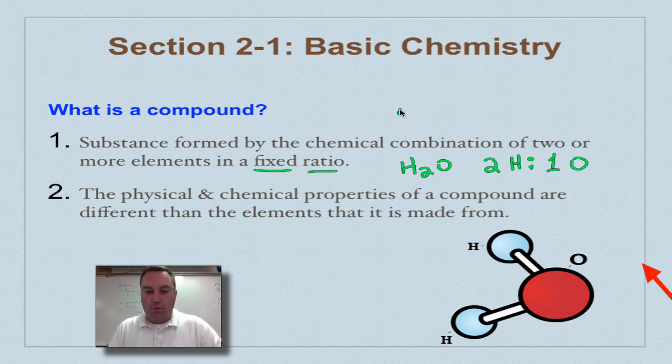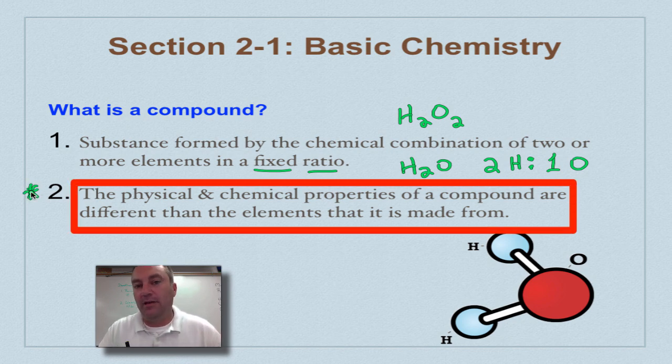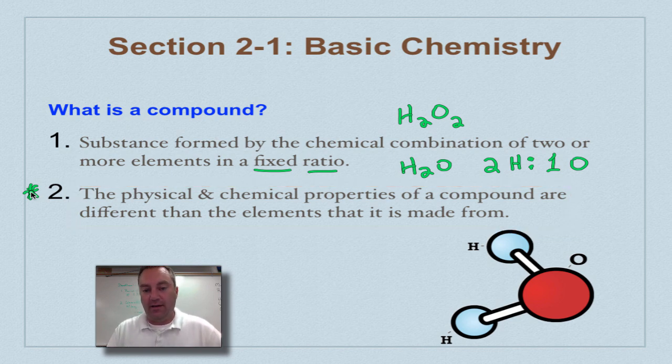So let's say we decided to have a compound that was H2O2. You're still made out of hydrogen and oxygen, but you got one extra oxygen. Is that water anymore? No, that's hydrogen peroxide. This is the chemical formula of hydrogen peroxide. The physical and chemical properties of a compound can be radically different than that of the elements that make it up.